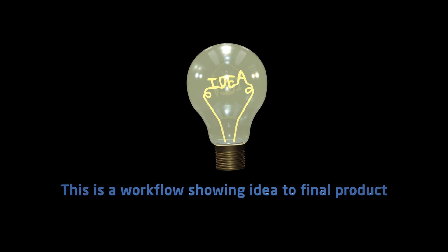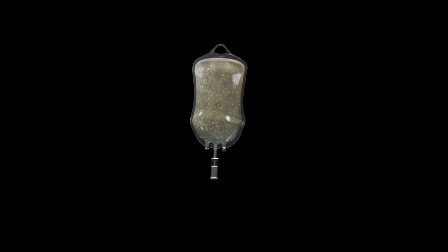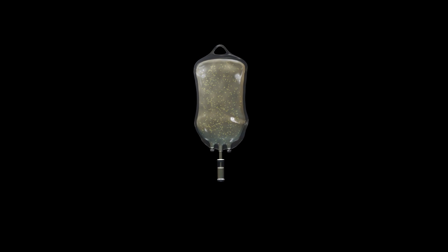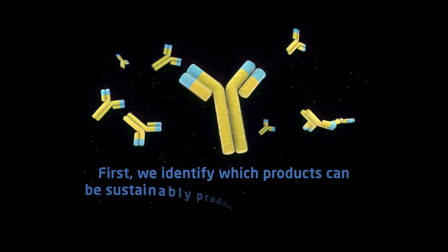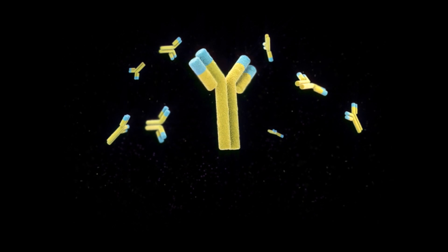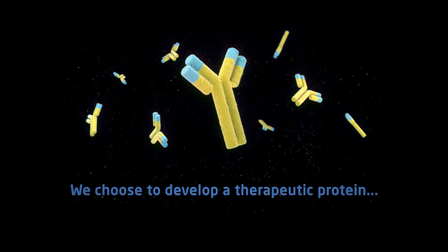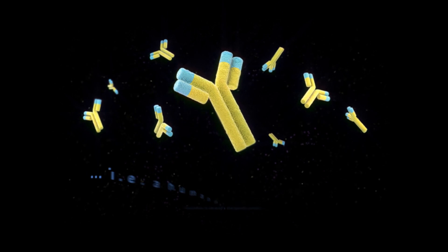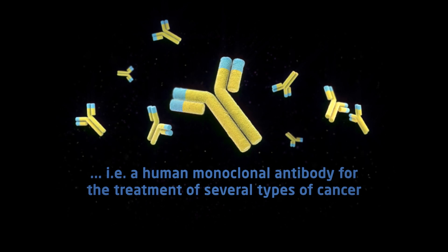This is a workflow showing idea to final product. First, we identify which products can be sustainably produced by cell factories. We choose to develop a therapeutic protein — a human monoclonal antibody for the treatment of several types of cancer.